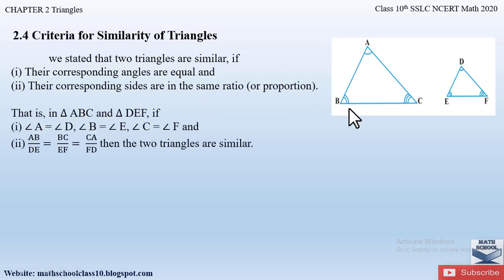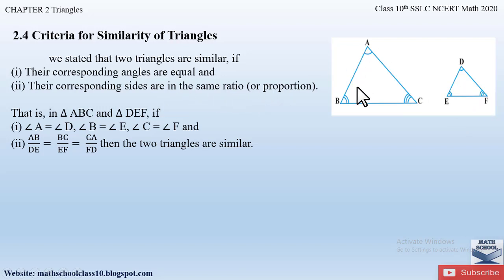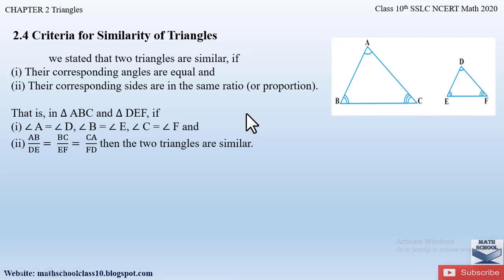So in triangles ABC and DEF, if angle A is equal to angle D, angle B is equal to angle E, and angle C is equal to angle F, and also their corresponding sides are in the same proportion — that is AB/DE = BC/EF = AC/DF — then we can say that the two triangles are similar.